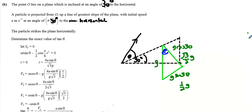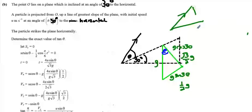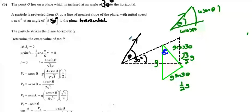Next we do our force/velocity components. We break up u — we can see u here with angle theta again — so we're going to have u cos θ and u sin θ. Now, it strikes the plane horizontally; this means the landing angle is the same as the angle of the wedge.